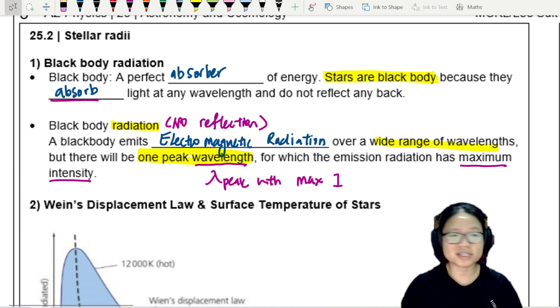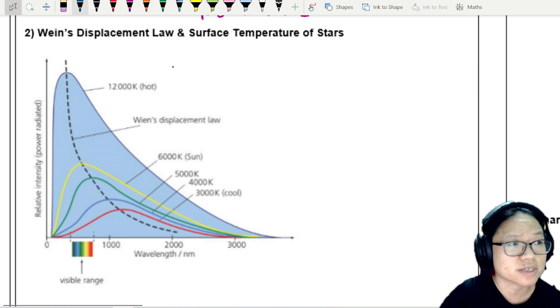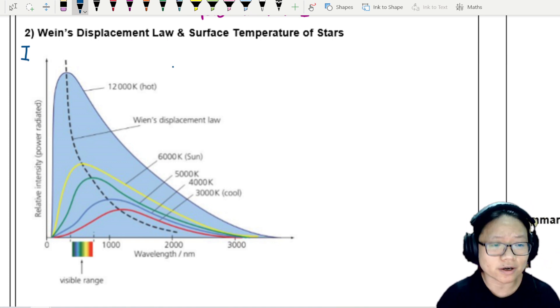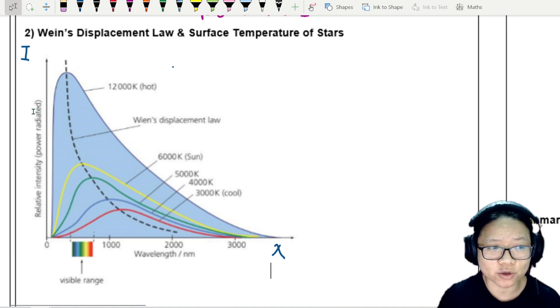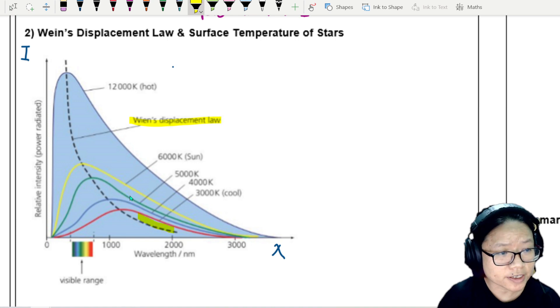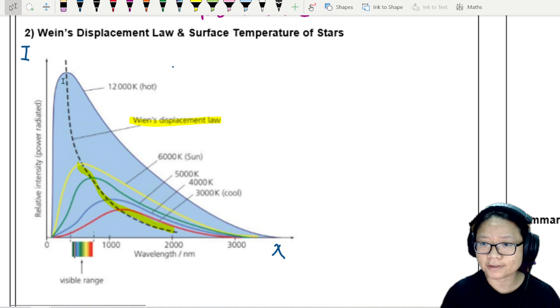So this brings us to Wien's displacement law and surface temperatures of stars. Here I have a graph of intensity against wavelength. This is the intensity of the electromagnetic radiation from your black body, your stars, and here is lambda. So I think you can see quite clearly that the first thing you notice is as the temperature rises, as it gets hotter and hotter, this dotted line shows us Wien's displacement law. So Wien's displacement law, you can tell as the temperature increases in this direction, you can see that the lambda peak is actually shifting. It has shifted from red to blue to green to yellow to violet or purple.